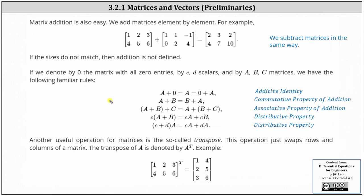Matrix addition is also straightforward. We add matrices element by element. For example, here we're adding two two by three matrices. We simply add the elements in the same position. One plus one is two, two plus one is three, three plus negative one is two, and so on. We subtract matrices in the same way. If the size or dimensions do not match, then the addition as well as the subtraction would not be defined.